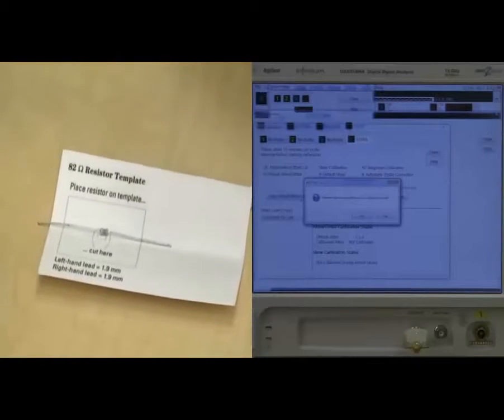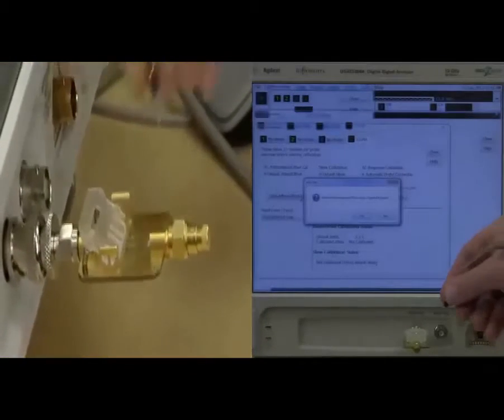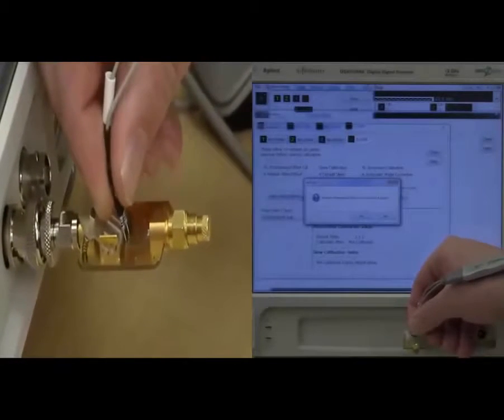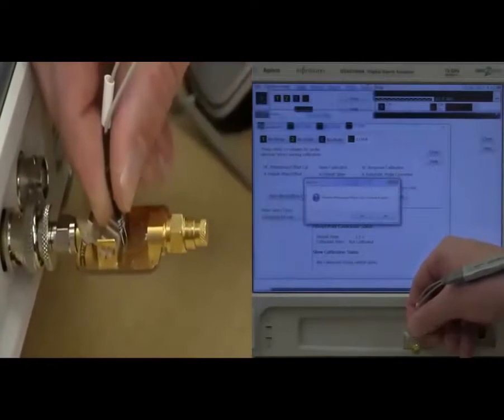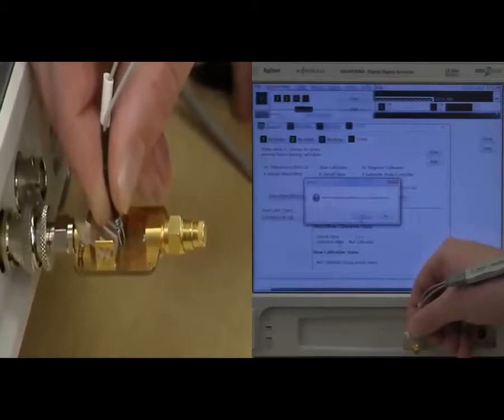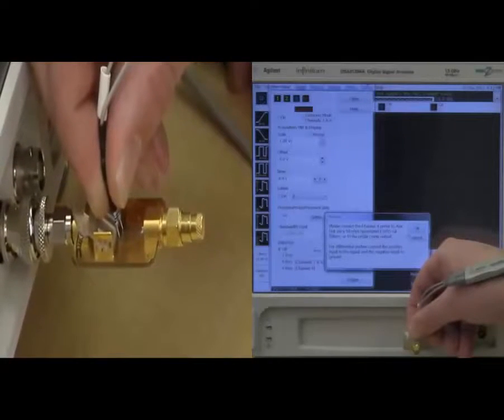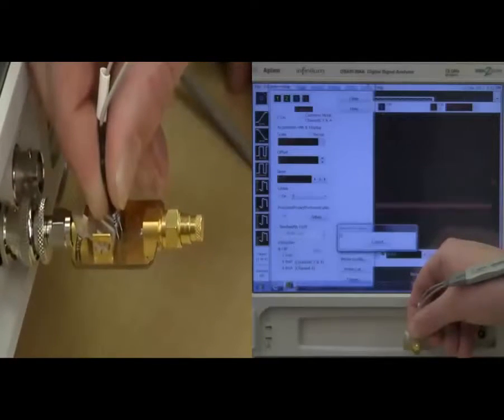It'll ask us if we want to do that, and of course we do, and we want to make sure that we put the plus side down to the center strip of the calibration fixture, at which point we can hit yes. And then it says to probe down to the calibration fixture, and I can simply hit OK.